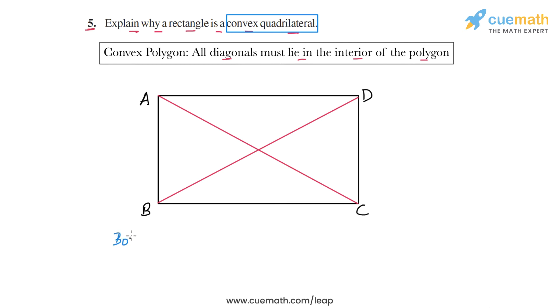So let's write out this reason: both diagonals of any rectangle lie inside that rectangle. And this is the reason why any rectangle will always be a convex quadrilateral, because both of its diagonals will lie inside the rectangle.